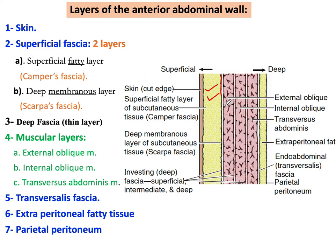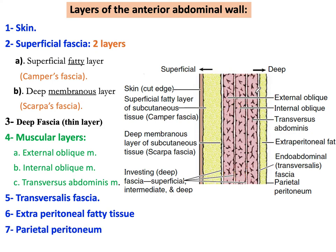Deep to the superficial fascia there is a deep fascia. In the anterior lateral abdominal wall, the deep fascia is a thin investing layer covering the muscles, as you can see here. This deep fascia covers the muscular layers from outside. The muscular layers are: the external oblique muscle, deep to it the internal oblique, and deep to it the transversus abdominis.